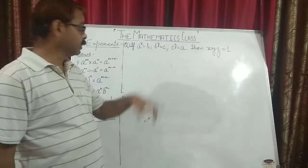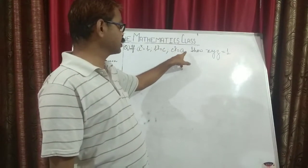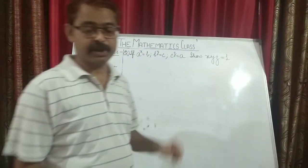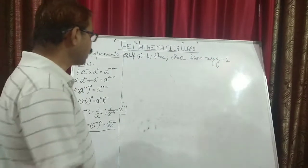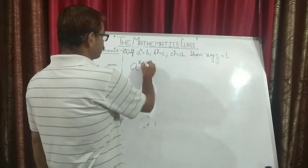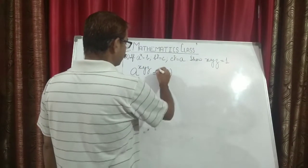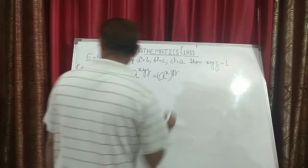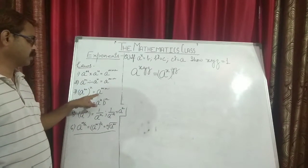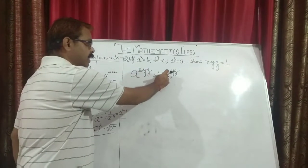The next question: if a to the power x equals b, b to the power y equals c, and c to the power z equals a, you have to prove that x times y times z equals 1. Since a appears on both sides, we can write a to the power (xyz) as a to the power x, whole to the power yz, by the third law.